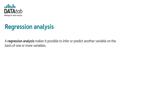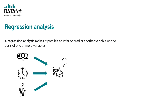A regression analysis allows you to infer or predict one variable based on one or more other variables. Let's say you want to find out what influences a person's salary. For example, you could take the highest level of education, the weekly working hours, and the age of a person, and investigate whether these three variables have an influence on salary. If they do, you can predict a person's salary using those variables.